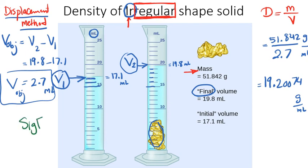Sig fig rules: if we have multiplication and division, use the smallest number of sig figs, or fewest sig figs. So I'm going to count the sig figs for the number on the top.